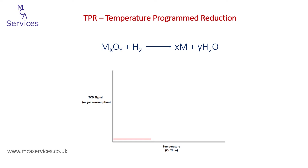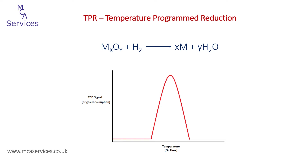We start analysis below the reduction temperature of the sample — with additional cooling of the furnace this can be subambient. As the sample temperature is raised, there's no reaction between the sample and the hydrogen in the carrier gas stream, so the TCD signal remains unchanged from its baseline. When the temperature reaches the point at which reduction starts, hydrogen in the analysis stream will be consumed by the sample and water formed will be removed by a cold trap, creating an imbalance at the TCD. The result is a peak on the TPR plot.